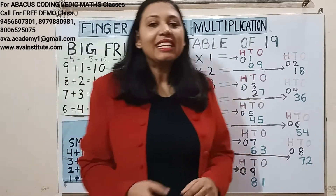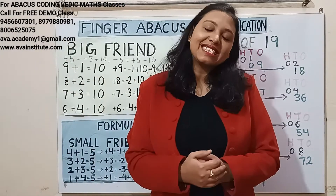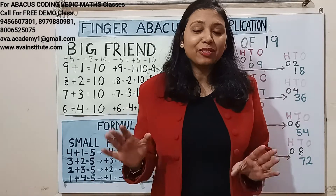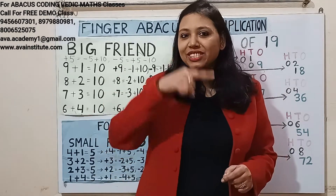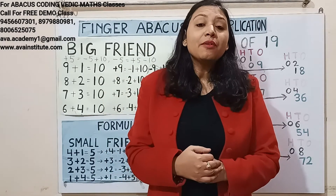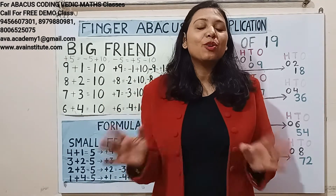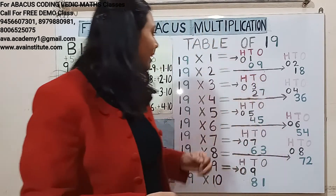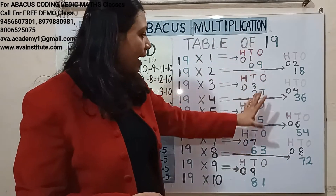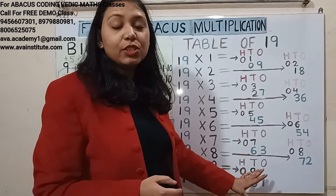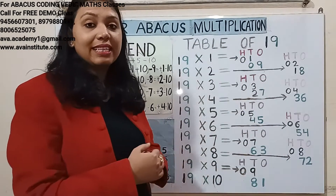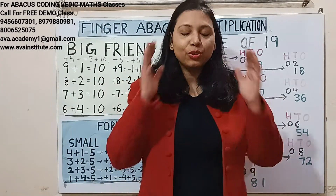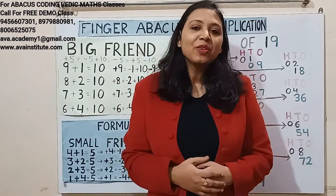19 tens are: 19 tens are 190. Friends, you don't have to do anything. You just have to put a 0. Friends, I hope you have understood. These I have written just to make you understand — you don't have to write anything, you just have to do it in mind.